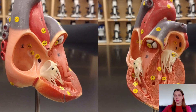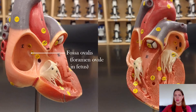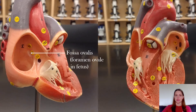Next, some internal structures. There's the fossa ovalis, which is just that little white disc. In the fetus it was the foramen ovale — an open hole between the left and right atrium. Because a fetus isn't breathing, there's no reason for all the blood to be sent to pulmonary circulation, so some blood can pass directly from the right atrium to the left atrium to be sent into systemic circulation.